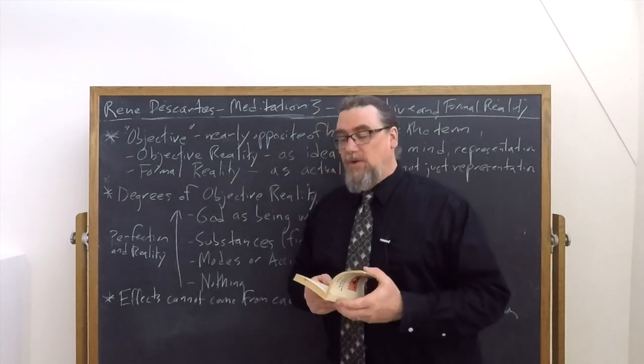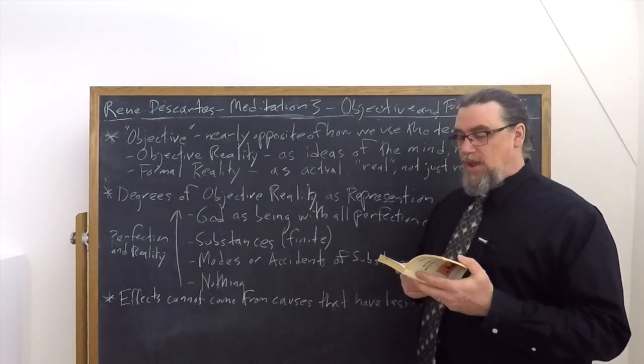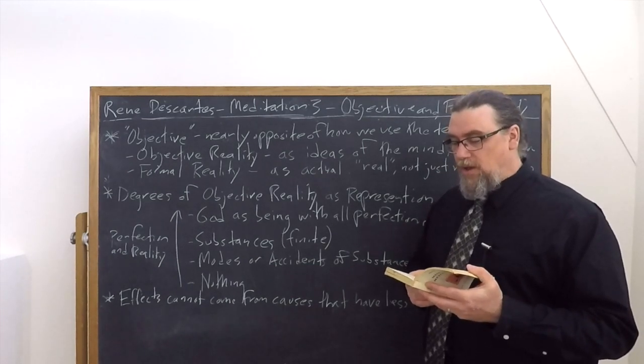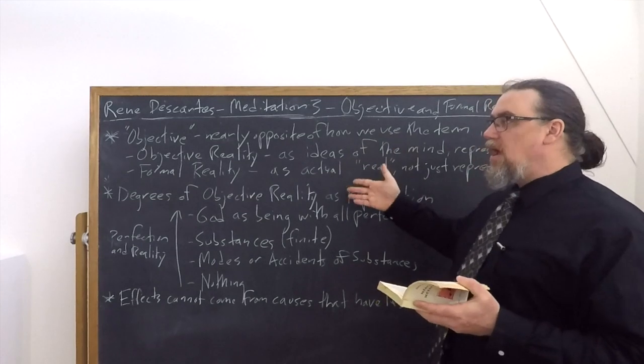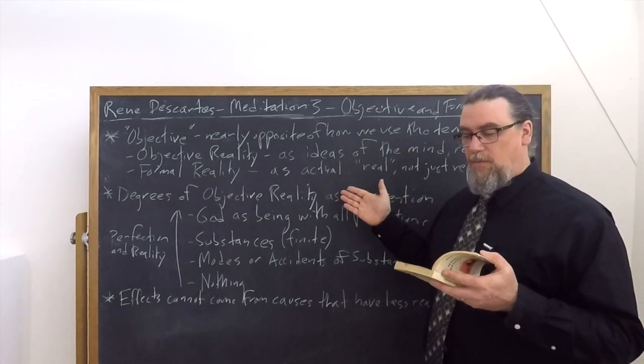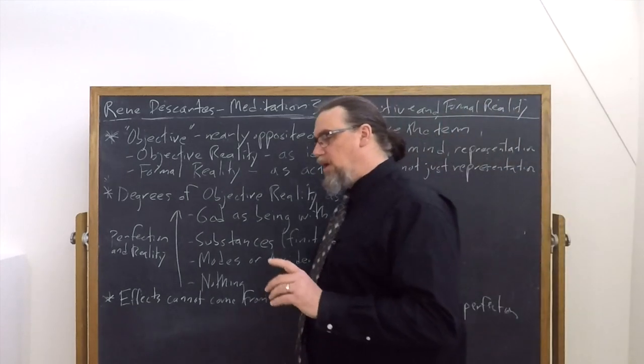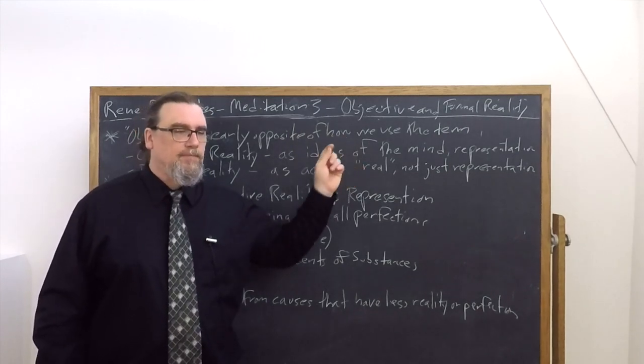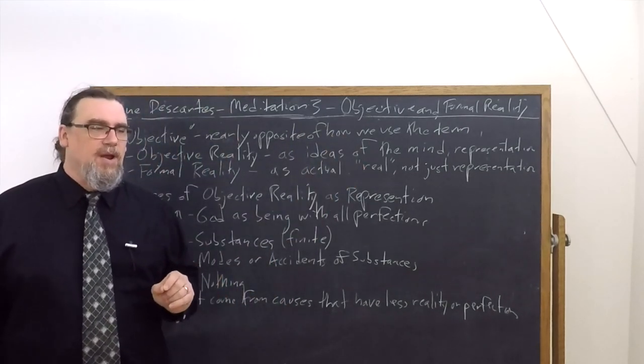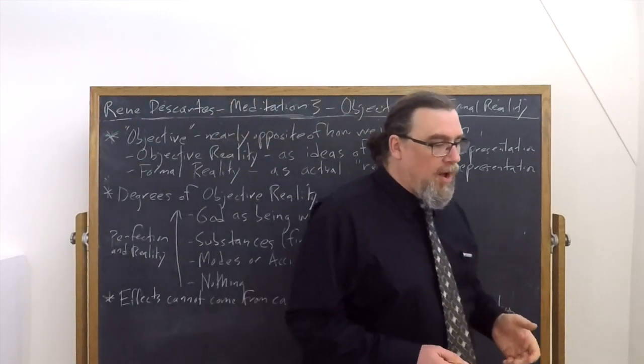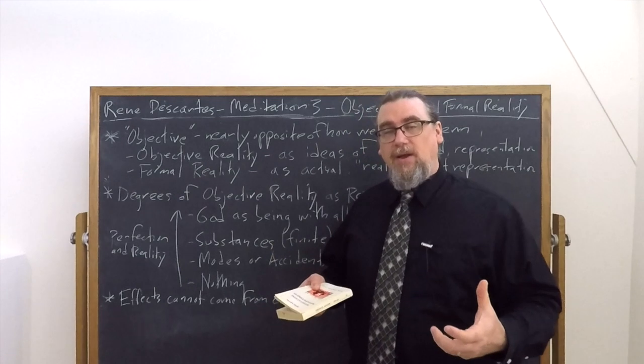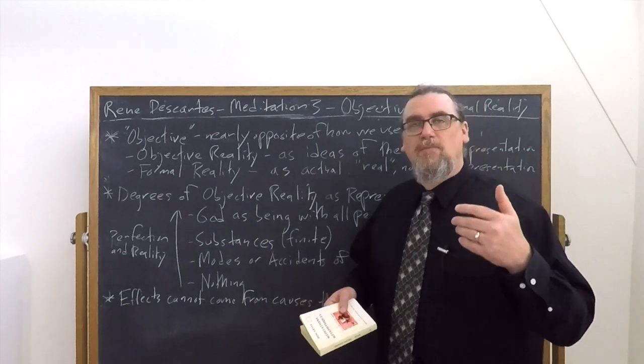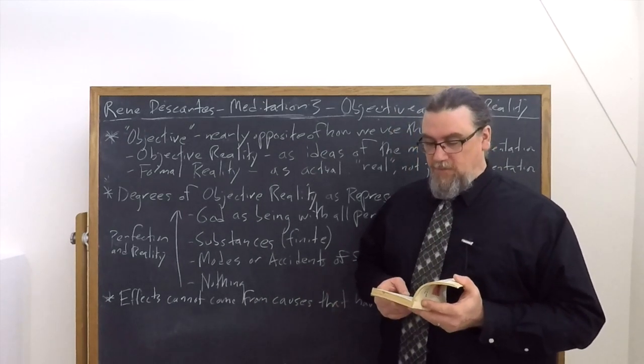And he goes on and he's talking here in the third meditation about different kinds of ideas that we have in our mind. And another thing that's really characteristic about this is not only do ideas have objective reality, some ideas have more objective reality than other ideas. There is what we could call a hierarchy of objective reality. And for Descartes, this has to do with what he calls their degree of perfection, that is being brought to fulfillment.